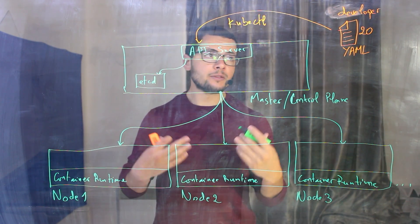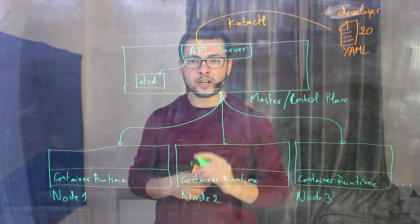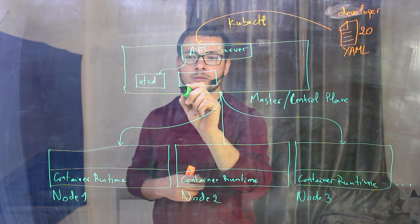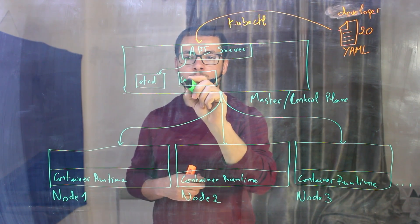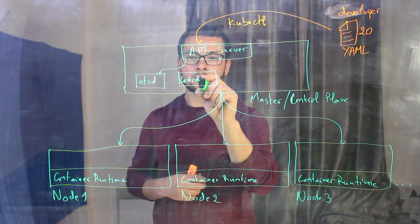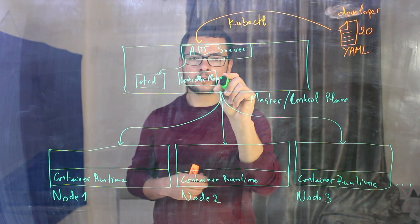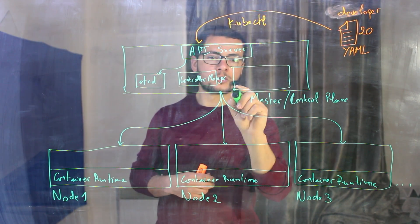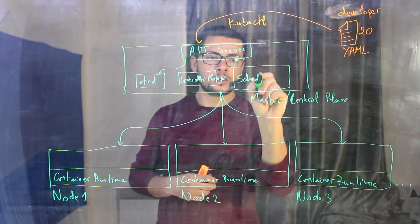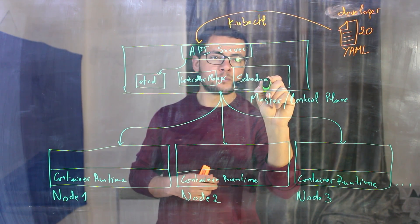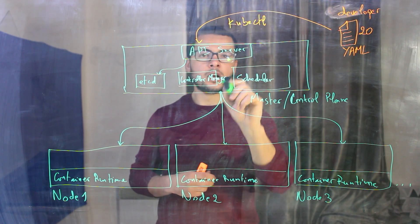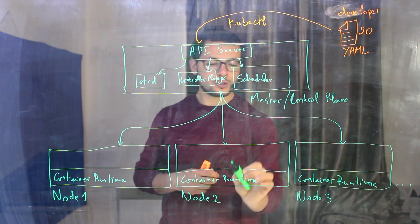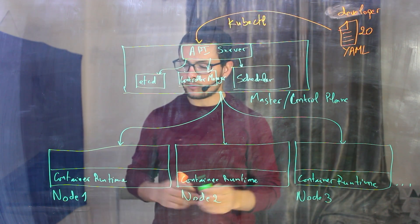Then when it finds that it really needs to create those 20 containers, it will go through the controller manager and also through the scheduler or the cube scheduler. This scheduler here is the one that will be responsible for deploying the containers onto those different nodes.